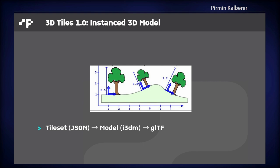The next type is the Instanced 3D Model, which means you have multiple instances of the same base model. A good example is trees. You have one tree model, or maybe a few tree models, and you have multiple instances of them. You can change certain parameters in the instances — like height or rotation angles — but the base model is the same. This is optimized for graphics cards; GPUs are very fast at instancing, so this works much faster than having a thousand trees as separate models.